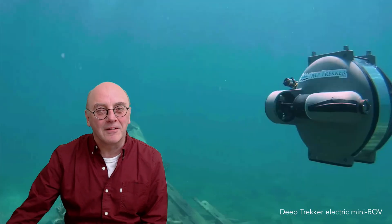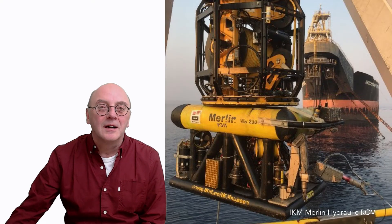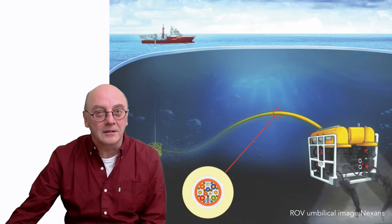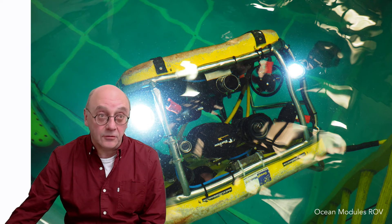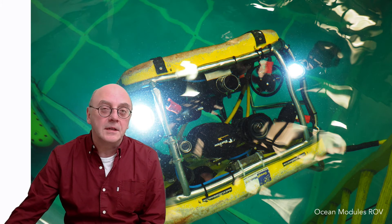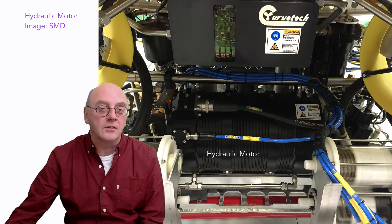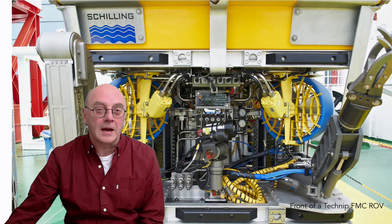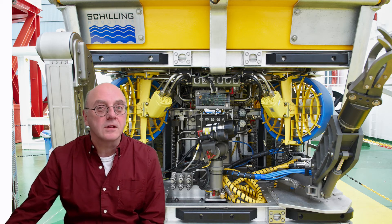Another way of classifying ROVs is to divide them into electric and hydraulic. Both types are fed by electrical power through the umbilical, and this electricity powers lights, electronic equipment, and the control systems. But in some cases, electricity also powers a hydraulic pump, which distributes hydraulic fluid around the vehicle to power manipulators, tooling, and importantly the thrusters.